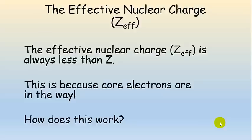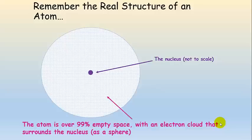The effective nuclear charge is always less than Z for a given element, because of those core electrons — they're in the way. To start thinking about this, we need a few pictures. Just to remind you of the real structure of an atom: we have an electron cloud around the nucleus that is over 99% empty space, and electrons are wave functions we call orbitals — they do not go around in orbits. What I'm going to show next is a useful mental model for thinking about effective nuclear charge.